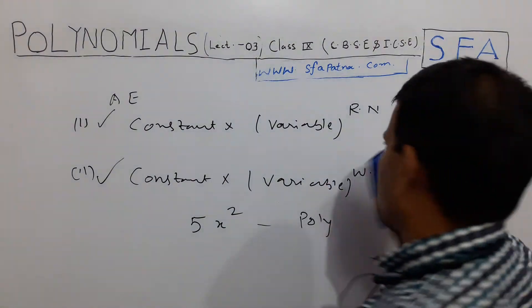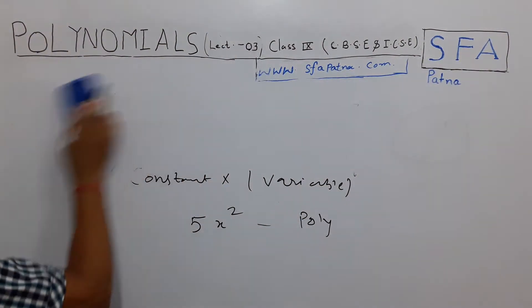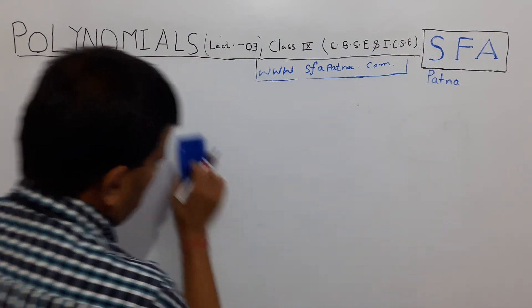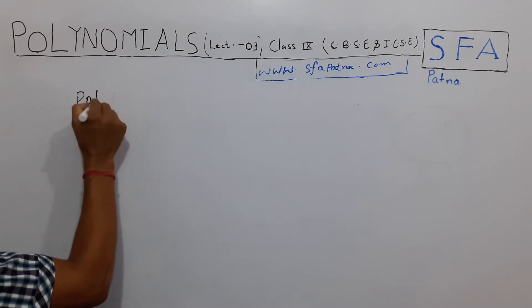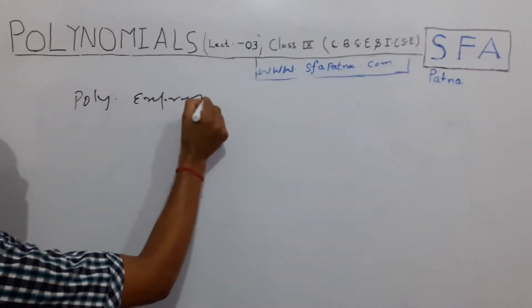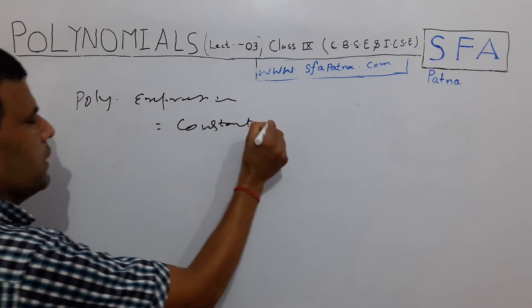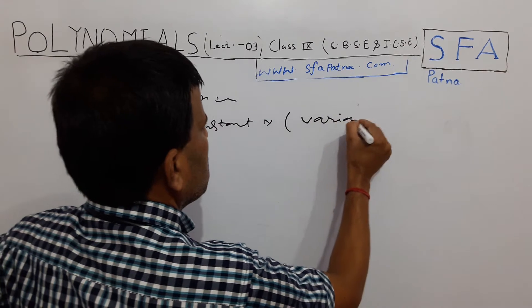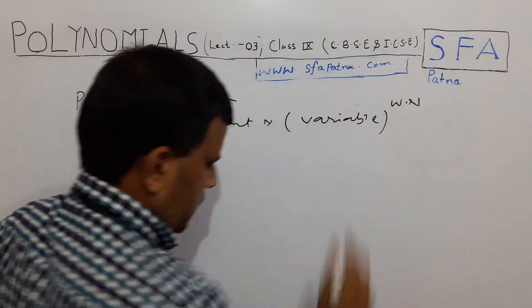Now let us discuss the remaining polynomial concepts. The basic concept for identifying a polynomial: the formula is constant into variable raised to the power of a whole number.